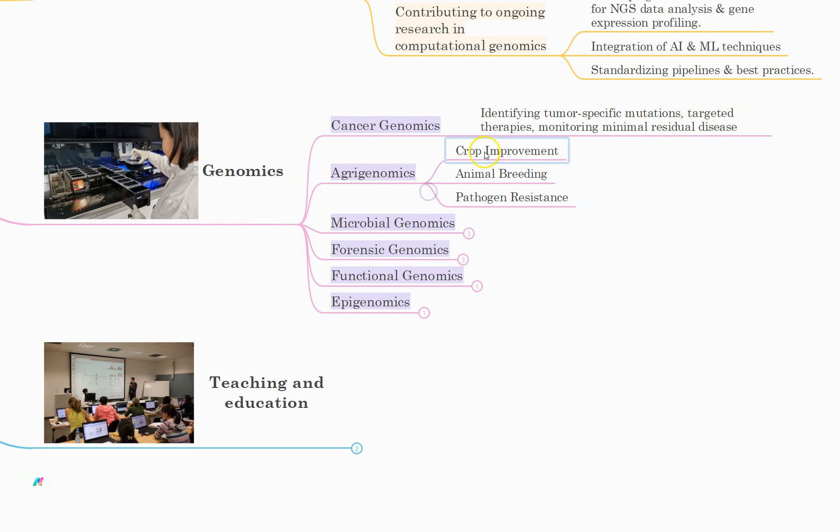From agri-genomics: crop improvement, genome-wide association studies or GWAS, and marker-assisted selection for enhanced crops can be studied. Animal breeding to identify genetic traits for improved livestock breeding programs. And pathogen resistance, identifying genetic factors for disease resistance in plants and animals.